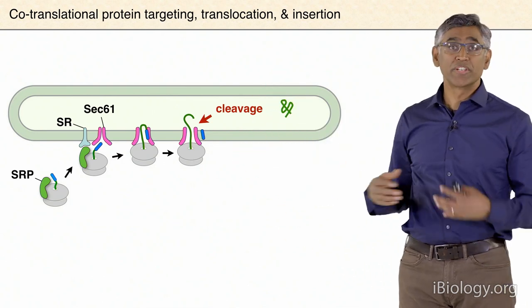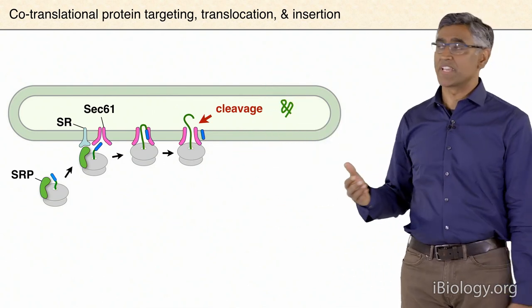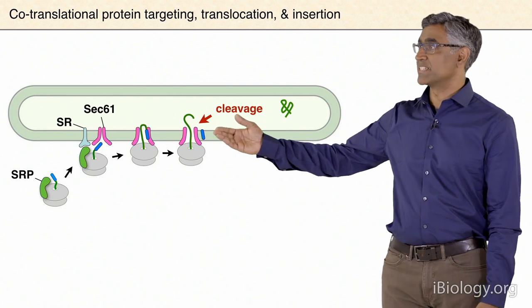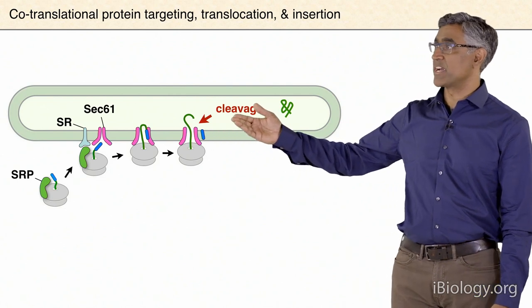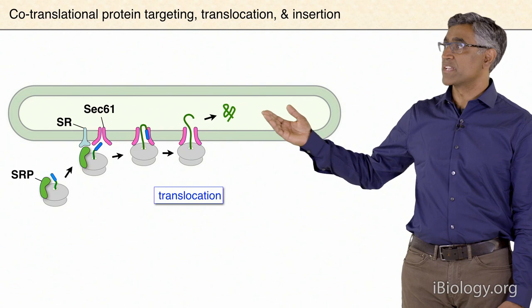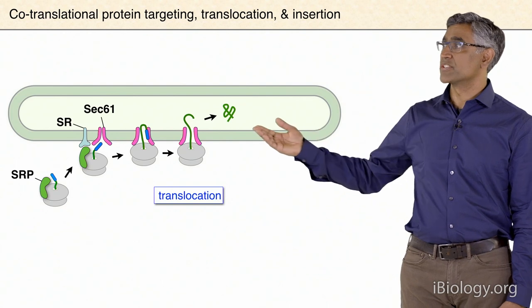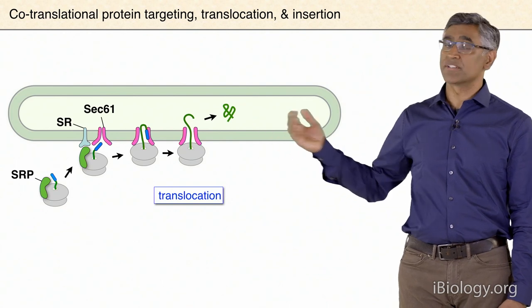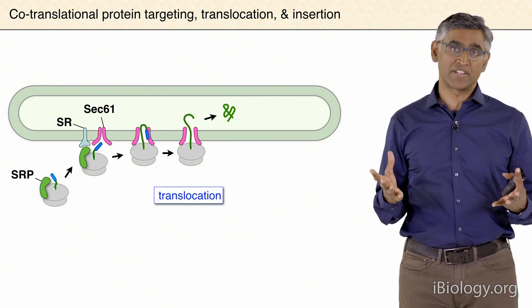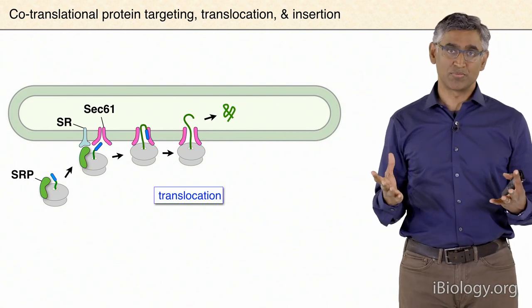Once transferred to SEC61, the signal has to successfully engage the SEC61 channel—not only be recognized, but somehow open the channel—so that in later steps you get a pore forming across the membrane and translocation of the protein. At some point during translocation, the signal peptide gets cleaved by a specific enzyme, and eventually you get translocation of the whole protein across the membrane into the lumen of the endoplasmic reticulum.